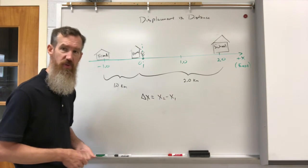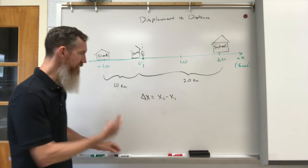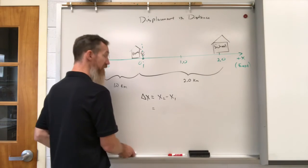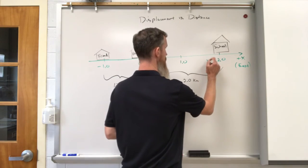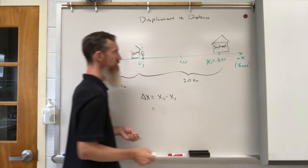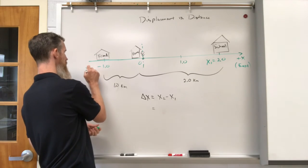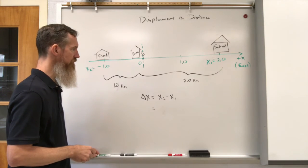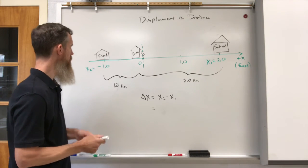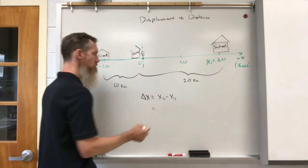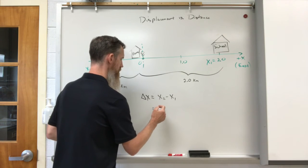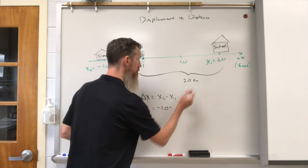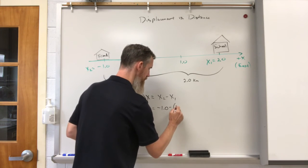But mathematically I want to show you what happens here. So if we say all right, we're going to define this trip as we started here at school and we ended here at our friend's house, okay, minus 1.0 minus the positive 2.0.